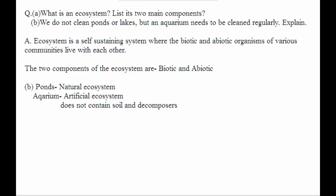So ponds are examples of natural ecosystems. We are not creating any ponds, right? Whereas an aquarium is an example of artificial ecosystem. So that is a man-made ecosystem.